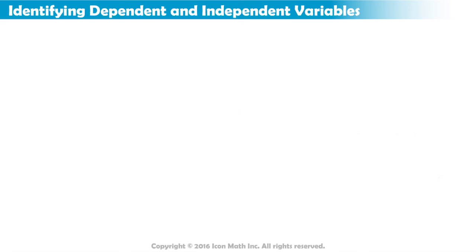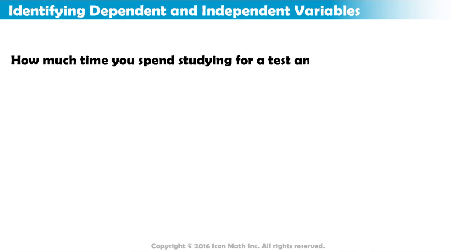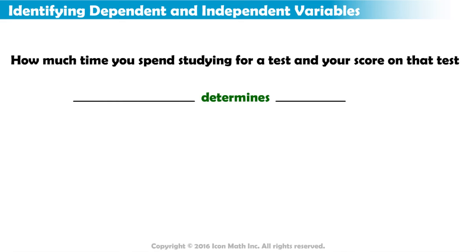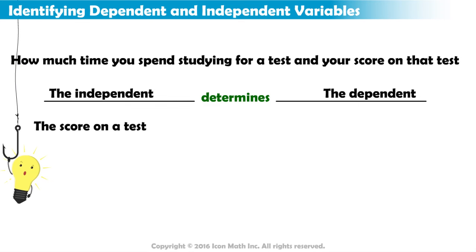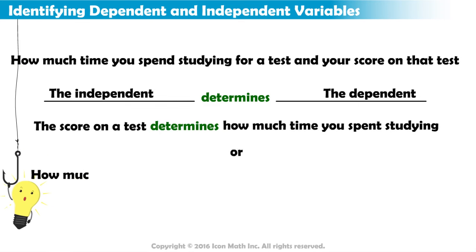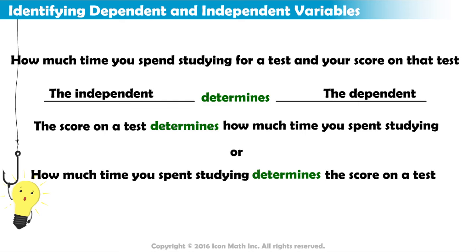Let's try another example: how much time you spend studying for a test and your score on that test. We will use our sentence structure again. Which sentence makes more sense? The score on a test determines how much time you spend studying, or how much time you spend studying determines your score on a test. How much time you spend studying determines your score on a test.